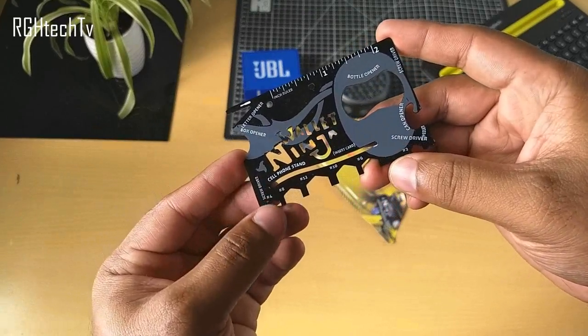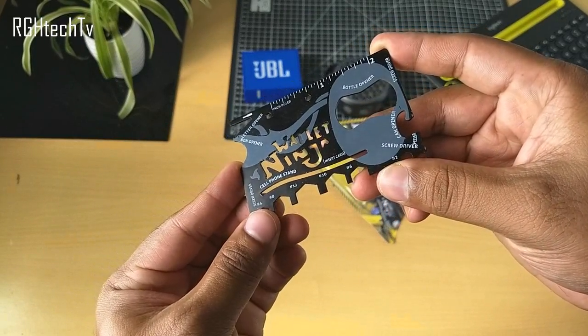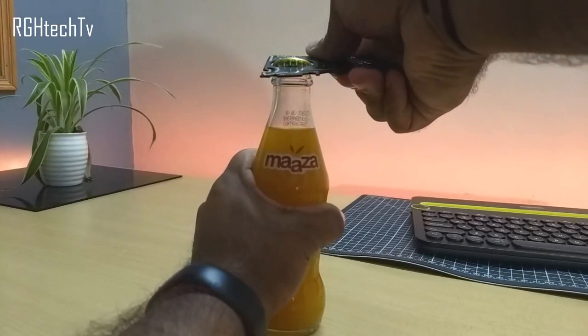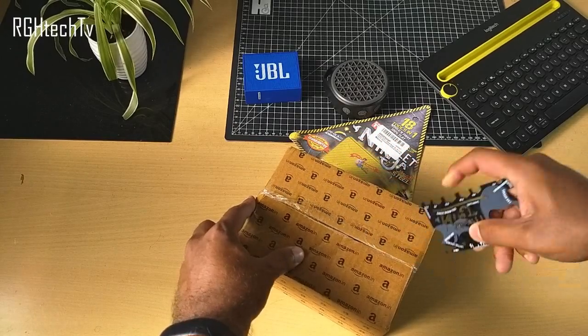Next up guys, once again I have a multifunctional survival tool which can perform 18 different functions. For example, it can act as bottle opener, can opener, screwdriver, peeler, box opener, letter opener. It also has eyeglass screwdriver.